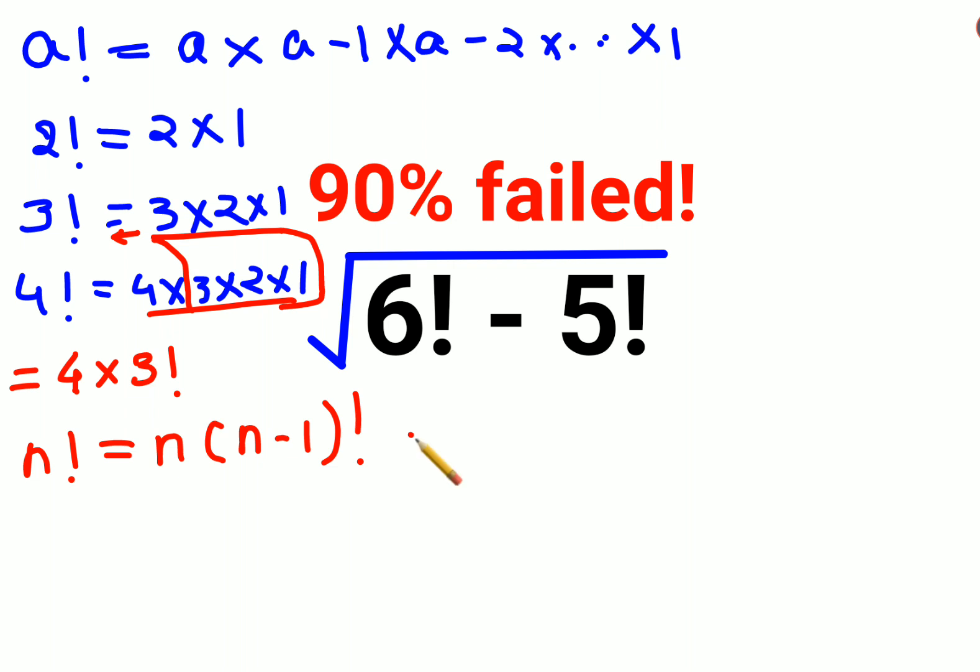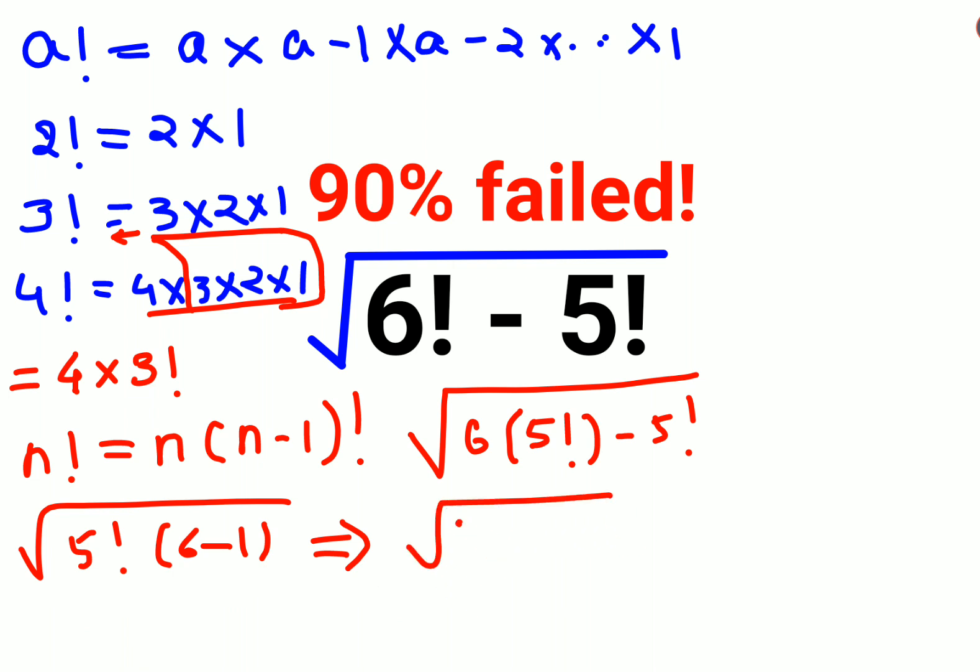Similarly here, 6 factorial will be written as 6 into 5 factorial minus 5 factorial. Let's take the 5 factorial outside the bracket and I am left with 6 minus 1. This comes out to be 5 times 5 factorial.